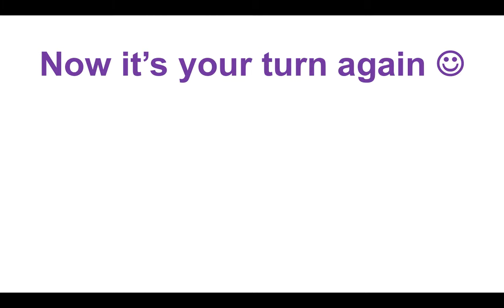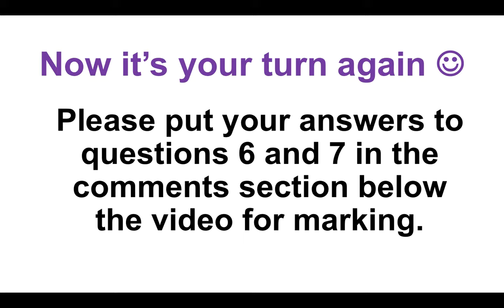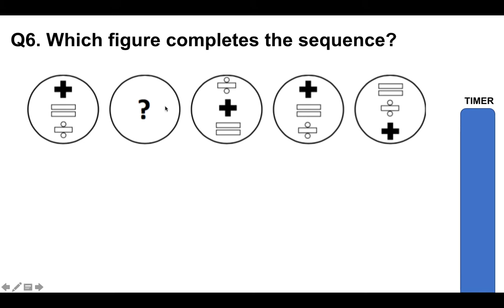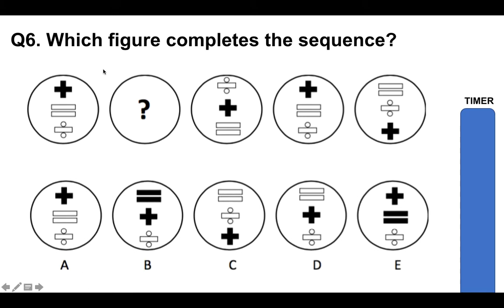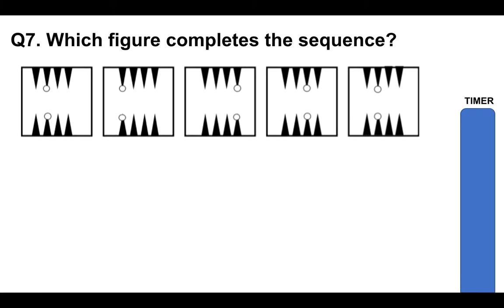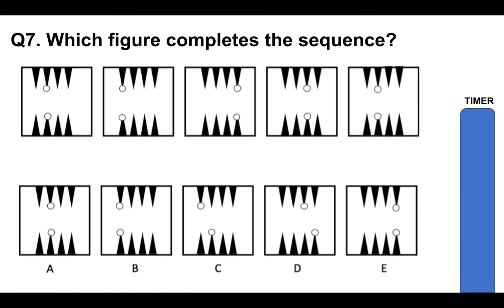So now it's your turn again. Please put your answers to questions six and seven in the comments section below the video for marking. So there are two here. Question six: which figure completes the sequence? We're looking for the answer where the question mark is from A, B, C, D or E. And question seven: which figure completes the sequence? We're looking for the one that comes next out of A, B, C, D or E.